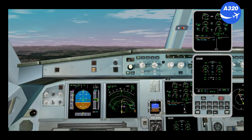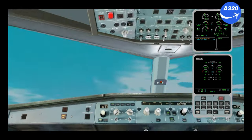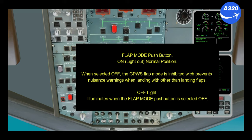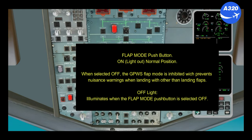Flight Controls — Flap System 1 Fault. ECAM Actions: EGPWS Flap Mode Off. The Flap Mode Push Button — On, Light Out, Normal Position. When selected off, the GPWS Flap Mode is inhibited, which prevents nuisance warnings when landing with other than landing flaps. The Off light illuminates when the Flap Mode Push Button is selected off.